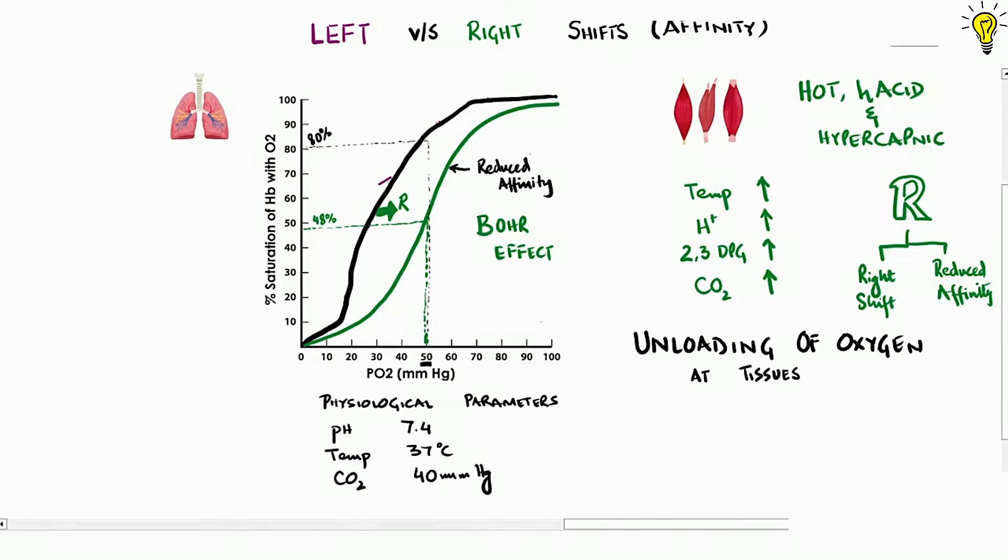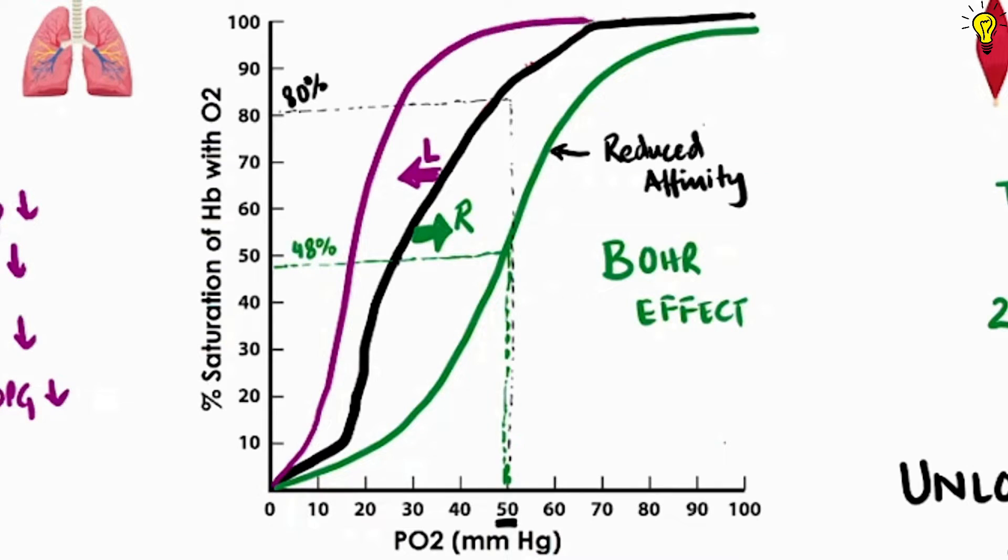The flip side of this spectrum is left shift in dissociation curve. So where all the parameters would start going low. So L for left, L for lower. When temperature, hydrogen ions, carbon dioxide and 2-3 DPG levels all go low in the surroundings of hemoglobin, the dissociation curve shifts leftwards, meaning hemoglobin increases its affinity for oxygen and tries to pull as many oxygen molecules as it can.